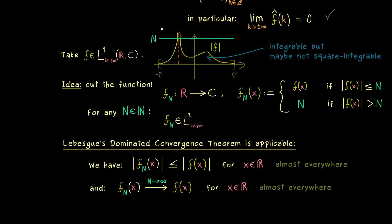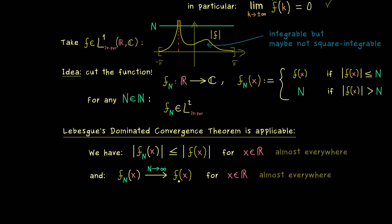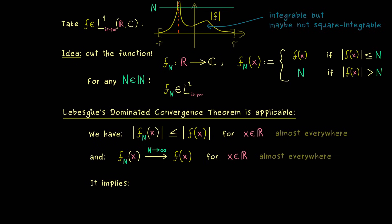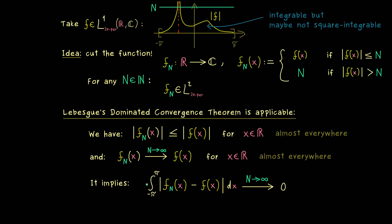Lebesgue's dominated convergence theorem then says: given these two assumptions, we also have convergence of fn to f with respect to the L1 norm. In other words, the integral of the absolute difference between fn and f goes to zero as n tends to infinity. This gives us the justification to push the limit into the integration.